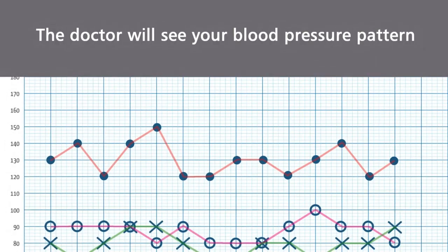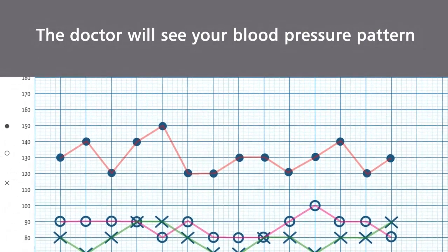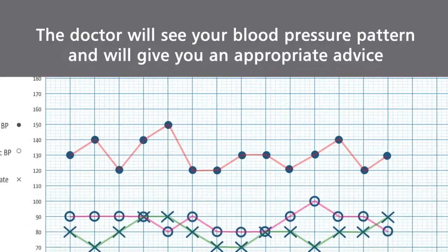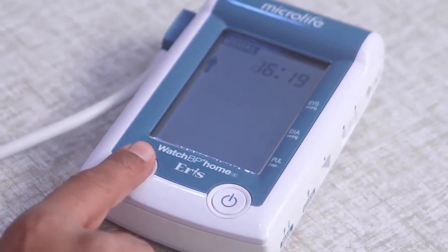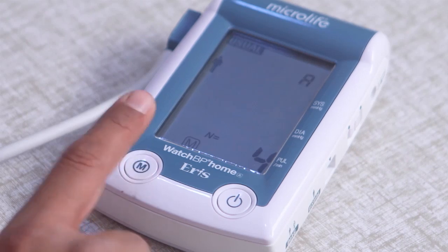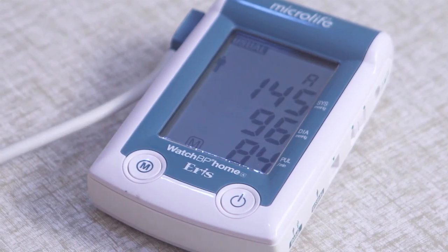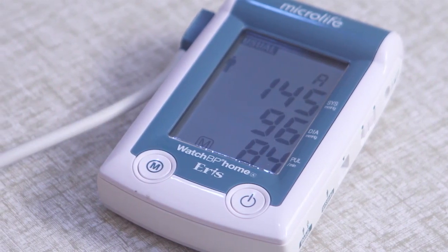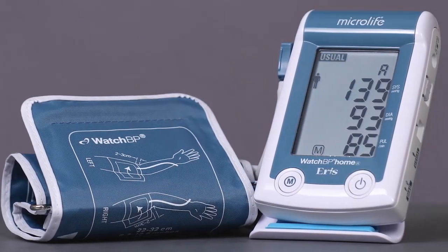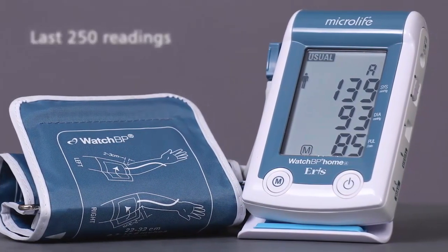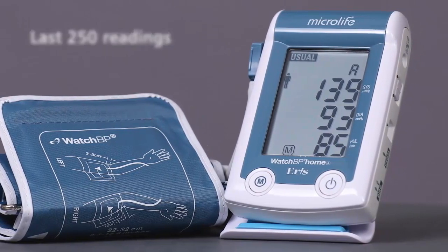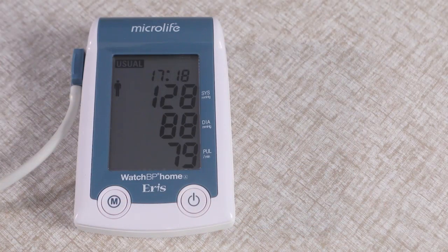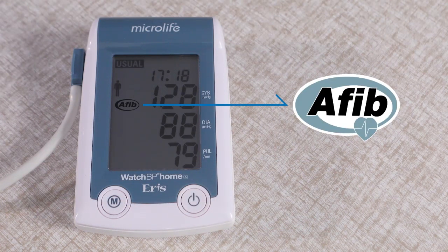The doctor will see your blood pressure pattern and will give you appropriate advice. To get average blood pressure, press and hold M button. The average number of all readings will be displayed. This device has the capacity to store last 250 readings. Update your doctor in case AFib sign appears on the screen.